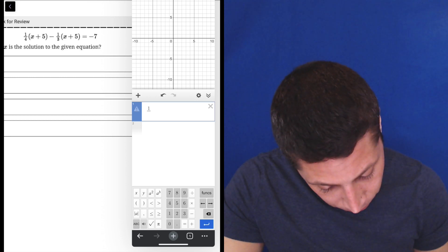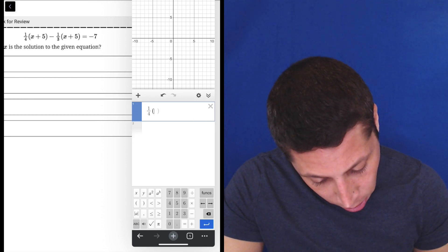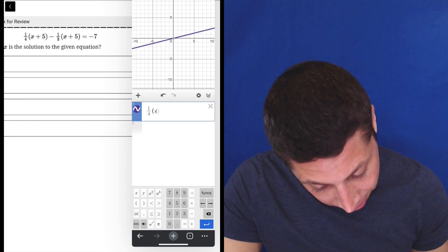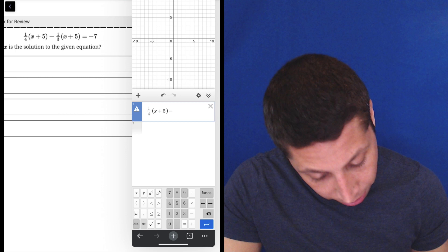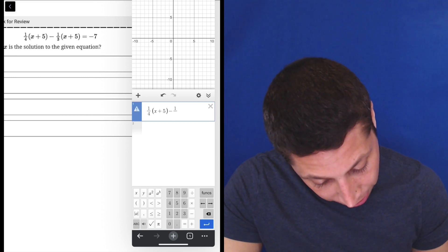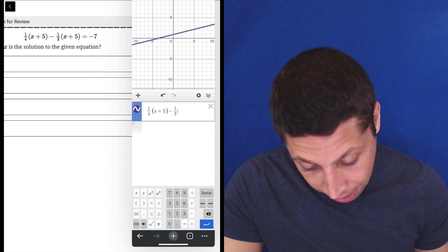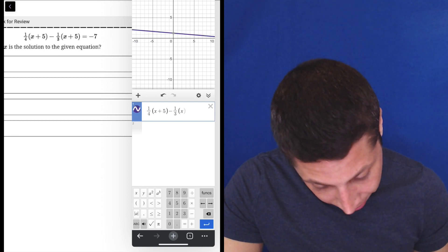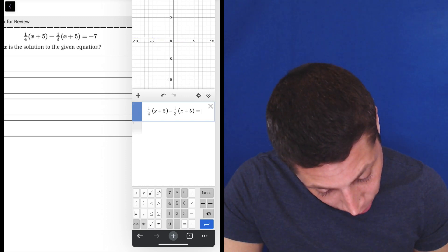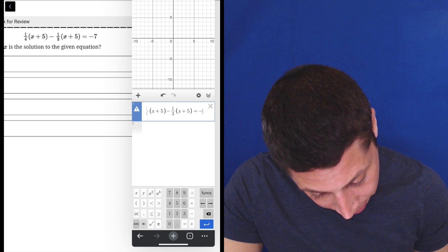All right. So, one fourth. We've got to be careful with all these parentheses. So, X plus five, and this is why I recommend a laptop and not a tablet for the SAT when you actually take it. It's a little tough to type this stuff on a tablet. X plus five. So, I'm just kind of going through here, and equals negative seven.